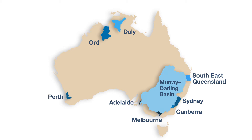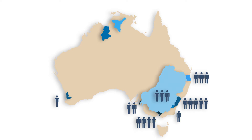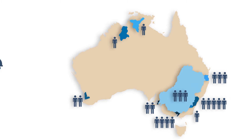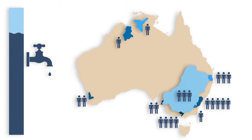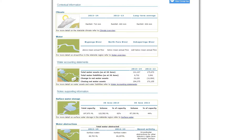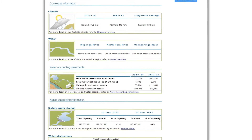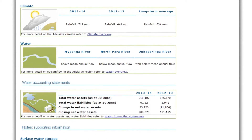Together, these regions are home to about 80% of Australia's population and represent around 70–80% of Australia's water use. Each regional report covers water availability, sources, trading and use.